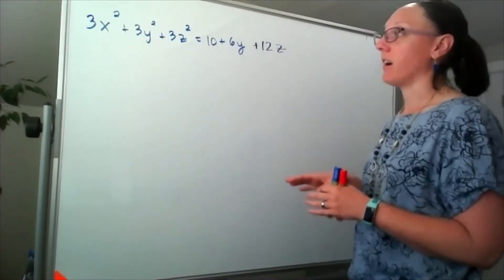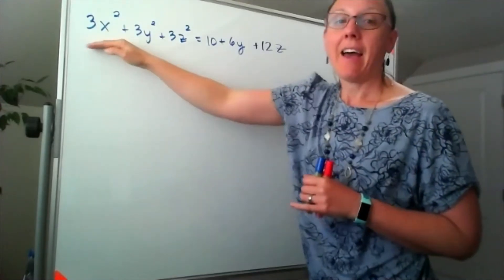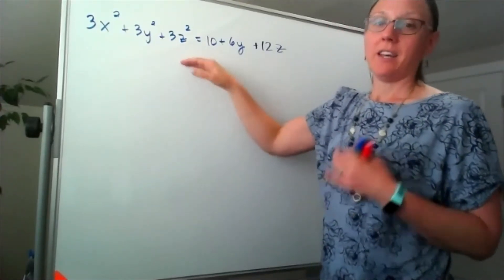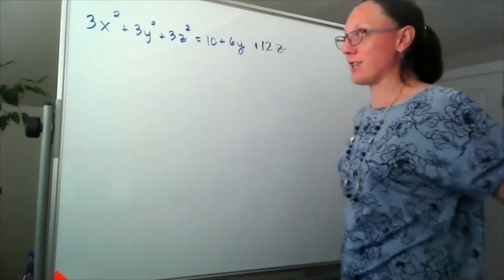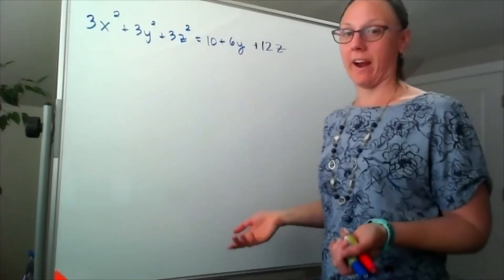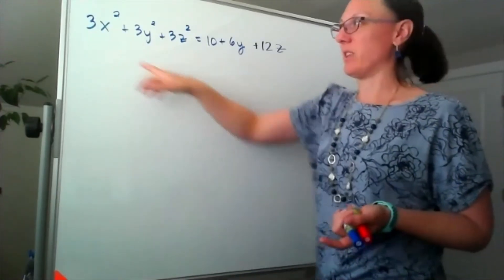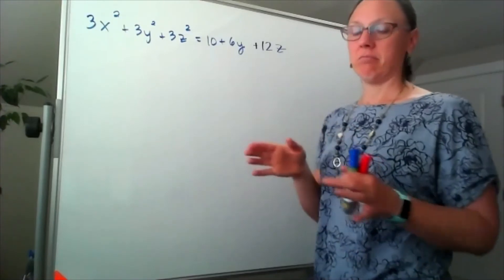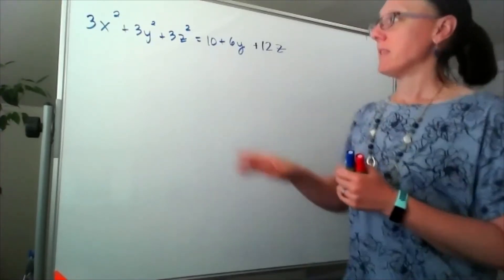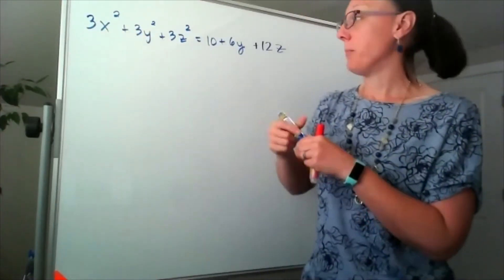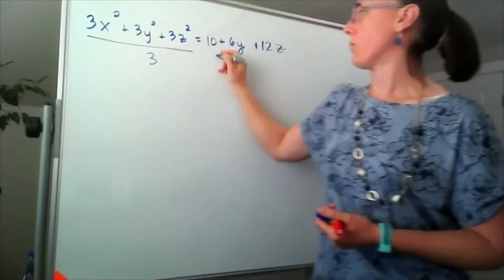So my starting point here is to say I have to get rid of these 3s. They're actually going to prevent us from completing the square, or we're going to end up dealing with a square root of 3. Doesn't sound good to me. So I'm going to start by dividing both sides of the equation by 3.